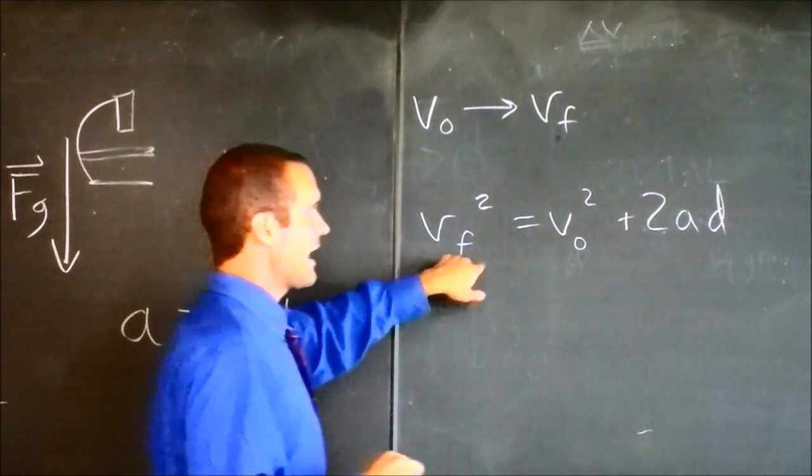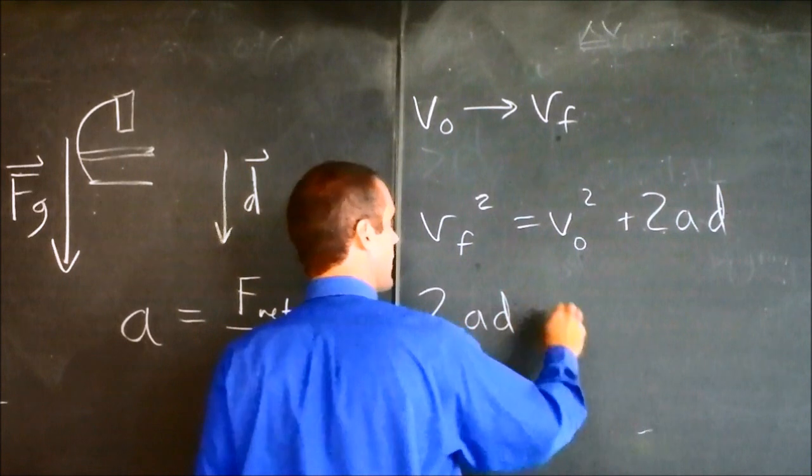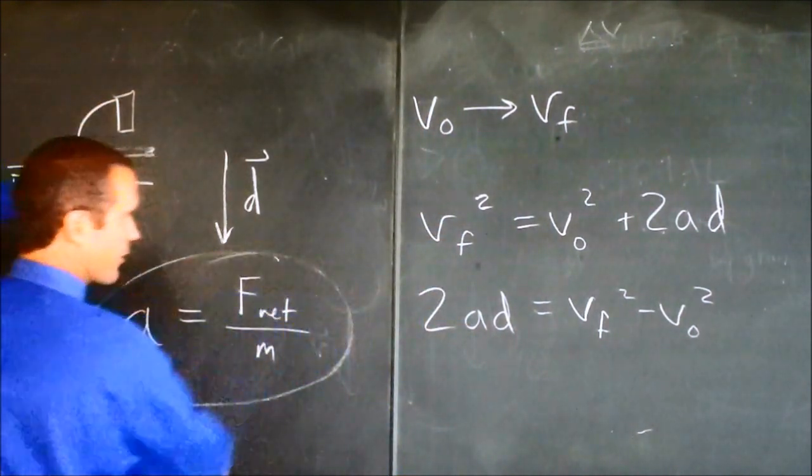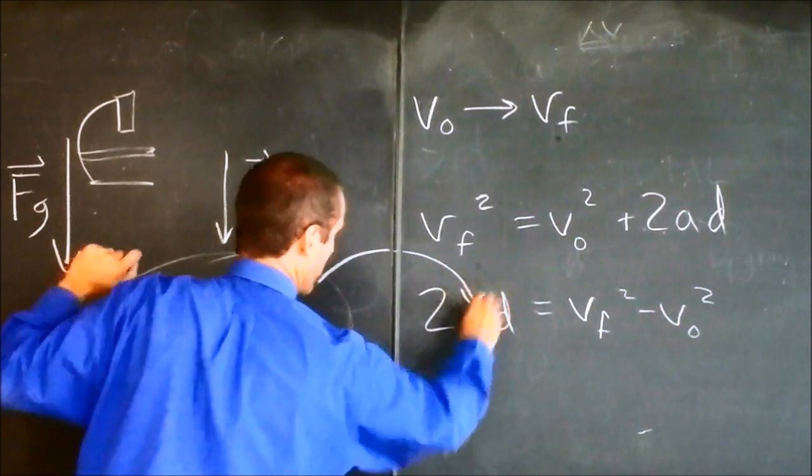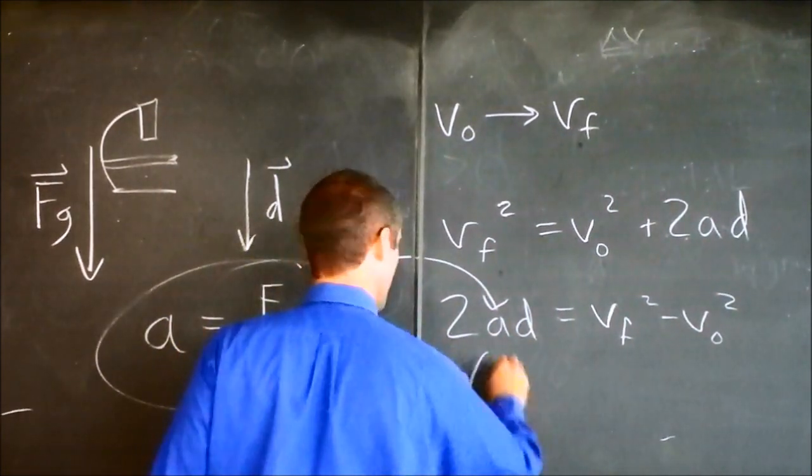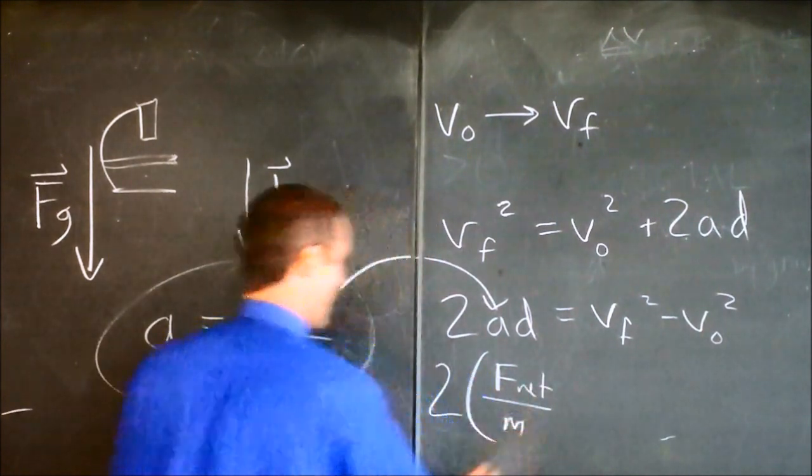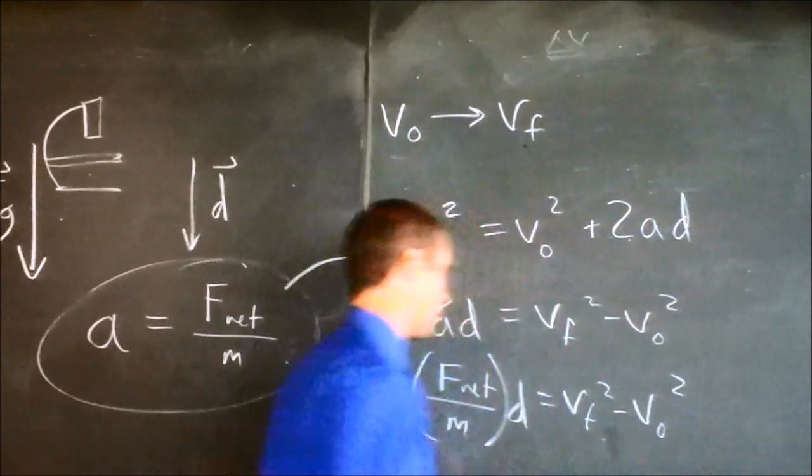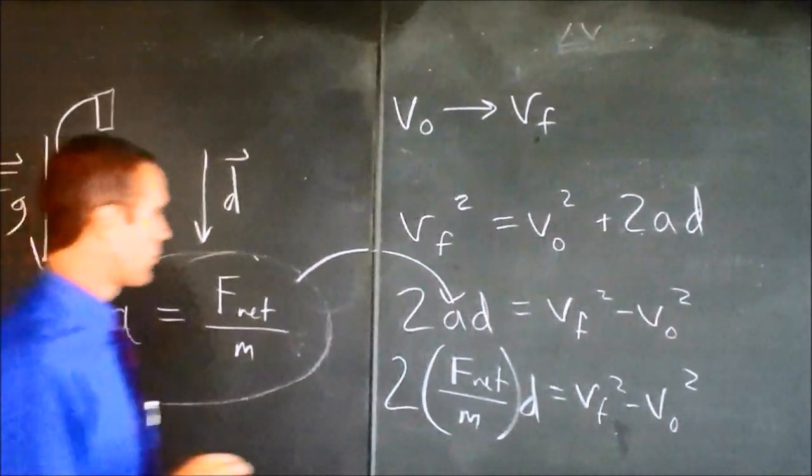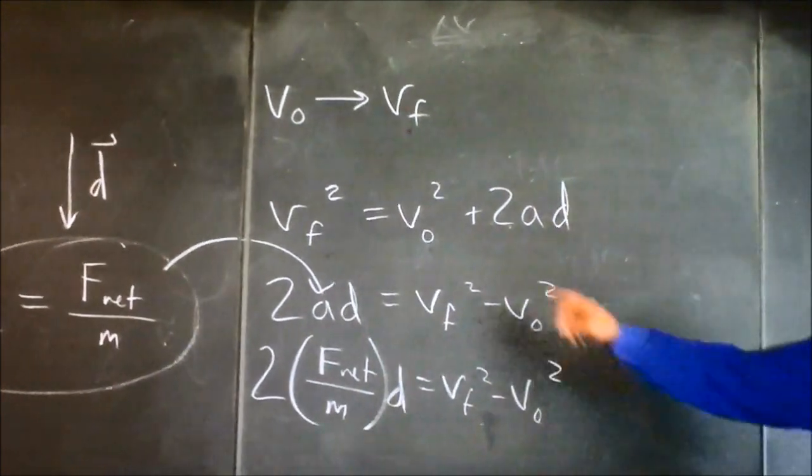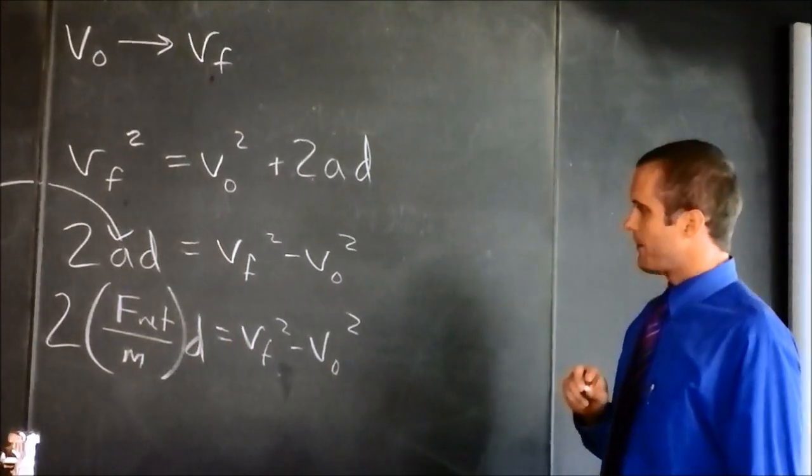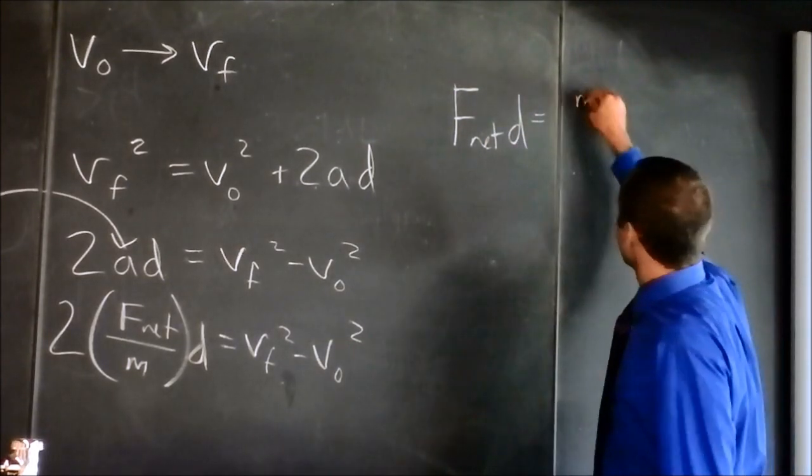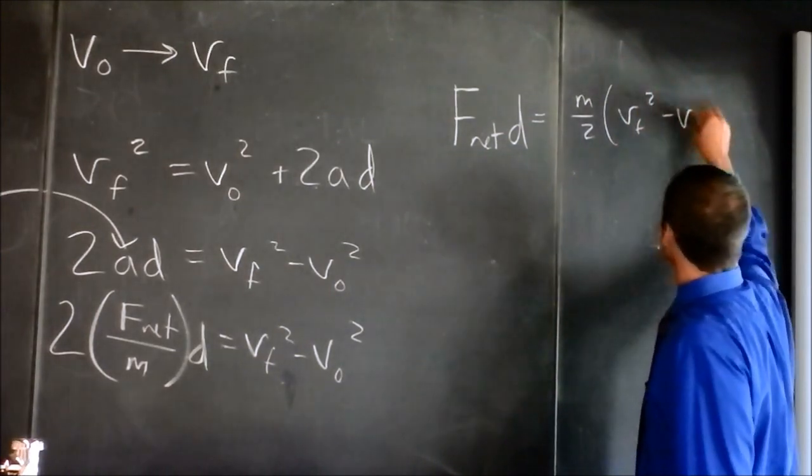I'm just going to rearrange this equation a little bit. I'll subtract v0 squared from both sides and flip it. I'm going to say 2ad is the final squared minus the initial squared. And now I'm going to take this definition of acceleration from Newton's second law, plug it in right here, and I've got 2 times F net divided by mass times d is equal to v final squared minus the initial squared. And now my plan is a slight rearrangement of this equation. I'll divide by 2 and multiply by m. And I'll get F net times distance is equal to m over 2 times v final squared minus v initial squared.